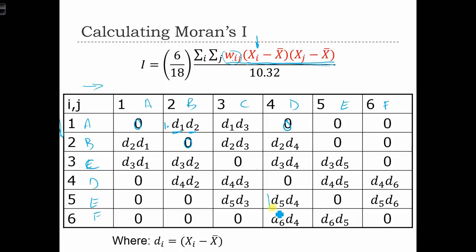Over here, as another example, we had the location E and D being neighbors. So for that pair of neighbors, we need to calculate its cross product term, which is just going to be x_5 minus x bar, so that's d_5, the deviation for 0.5, and x_j minus x bar, which is d_4, the deviation for location 4, or location D. So we're going to go ahead and fill out this entire matrix. And on this page, we're just showing you the schematic of what all of these entries are going to contain.